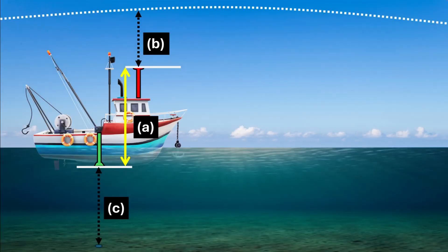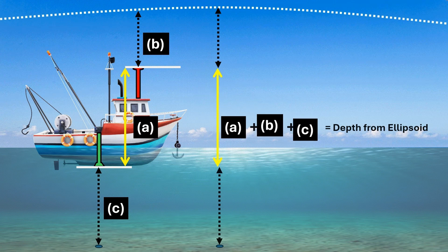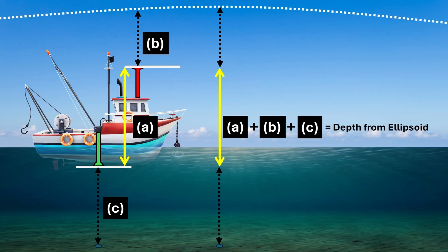How do we do it? First, we need to measure the distance from the GNSS antenna to the echo sounder — say it is A. The GNSS antenna will always give us the ellipsoidal height; suppose this is B. And the echo sounder will give us the height above the seabed, which is C. Now you combine them all — A plus B plus C — and you get the distance of the seabed from the ellipsoid.